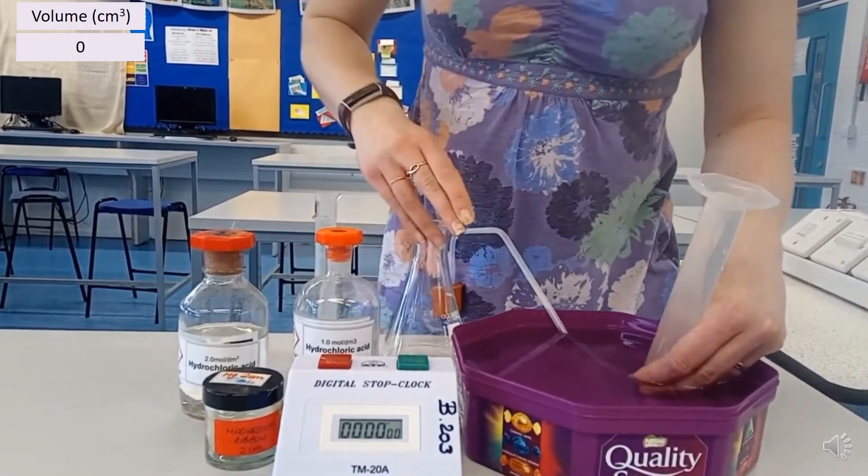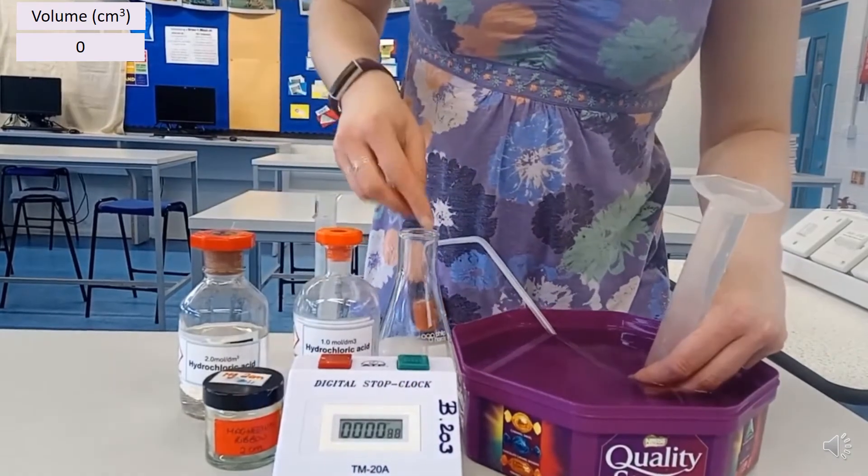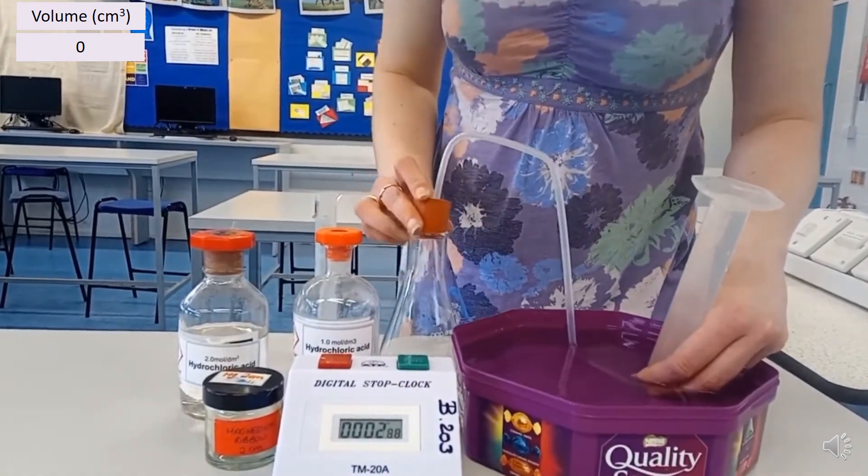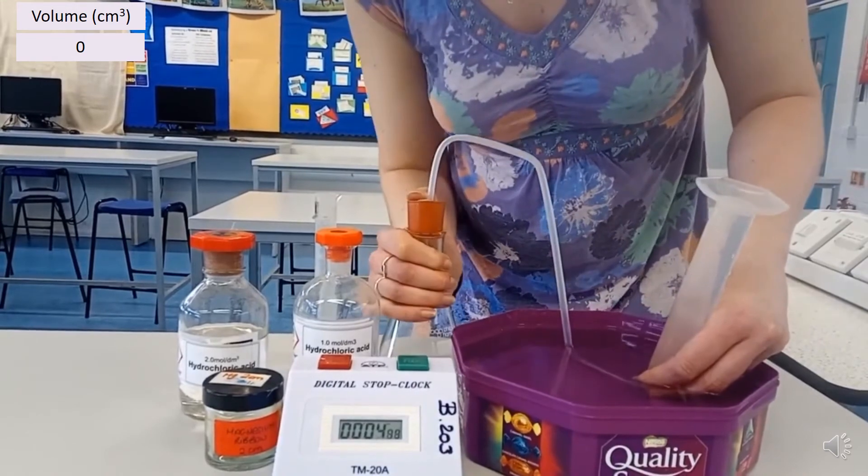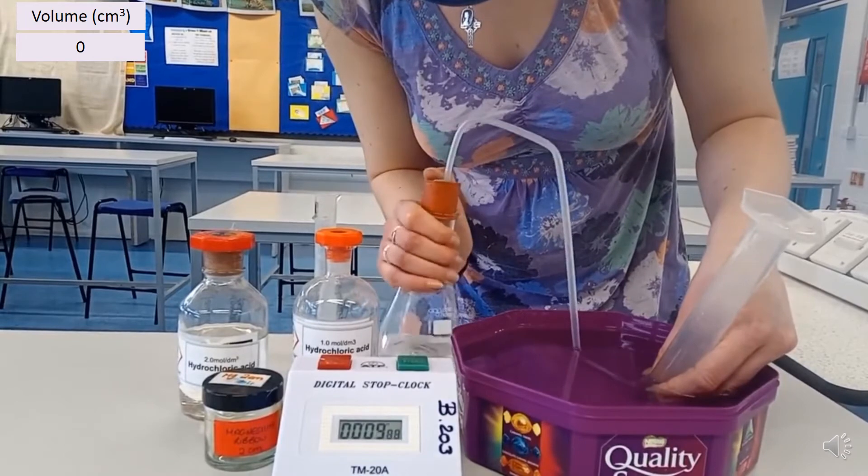Starting from zero. Now this next bit is a little bit tricky with just one pair of hands, but I start the stop clock, add the metal into the acid, and then attach the bung. And then every 15 seconds, I'm going to look at my measuring cylinder and write down what the volume of gas collected is.